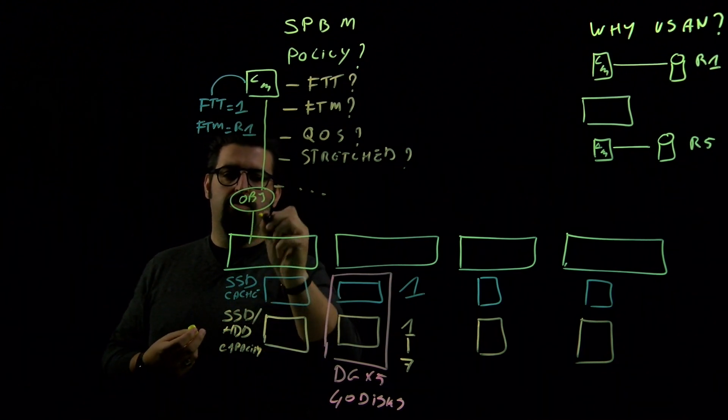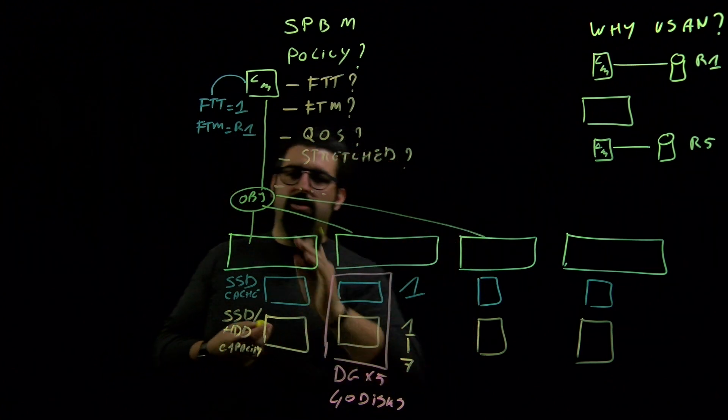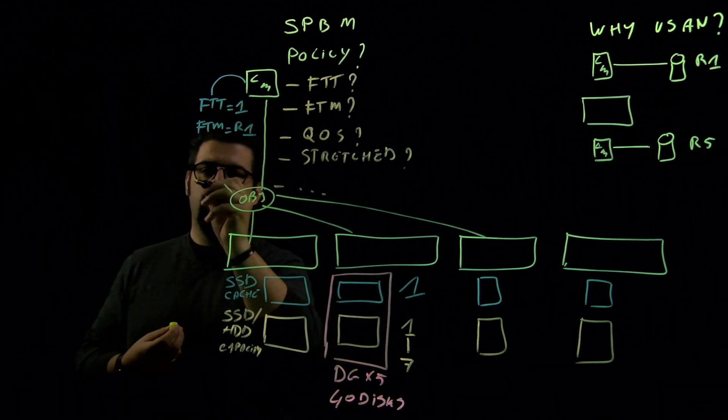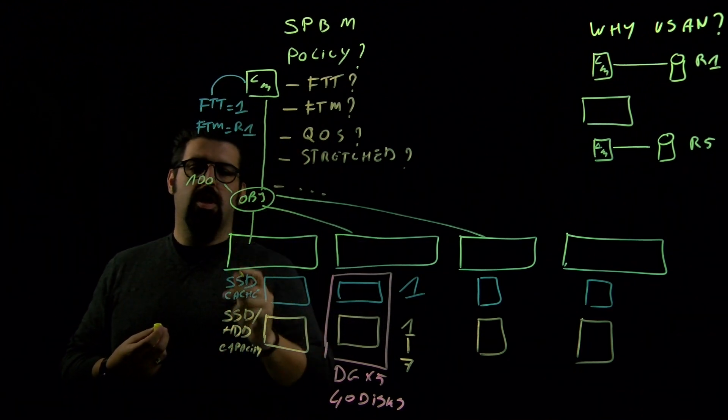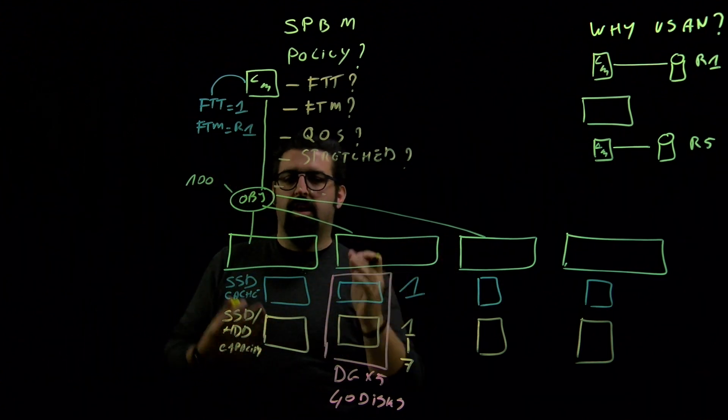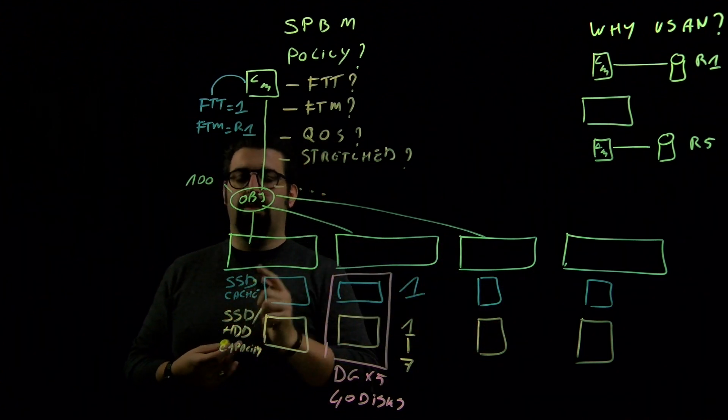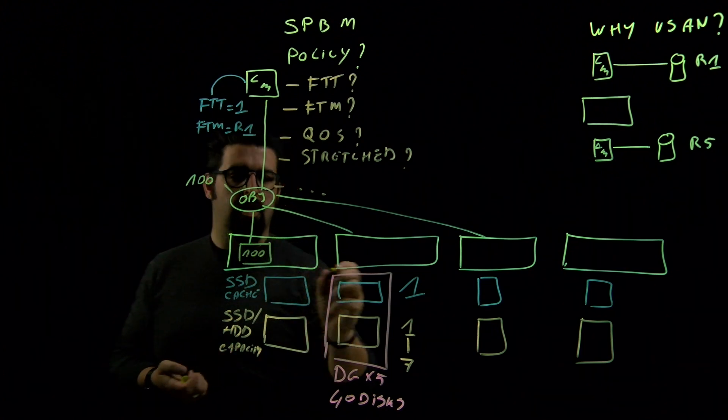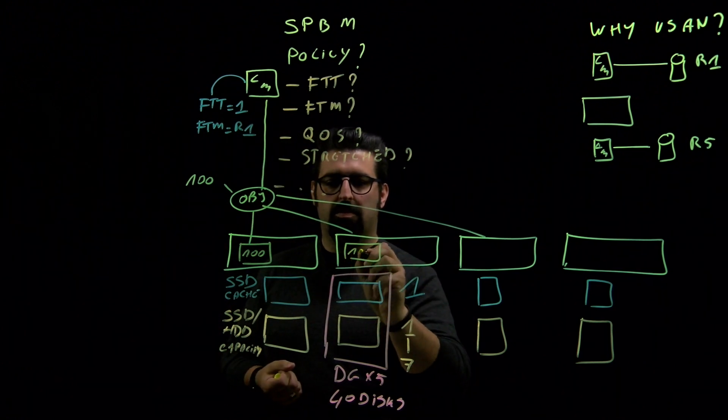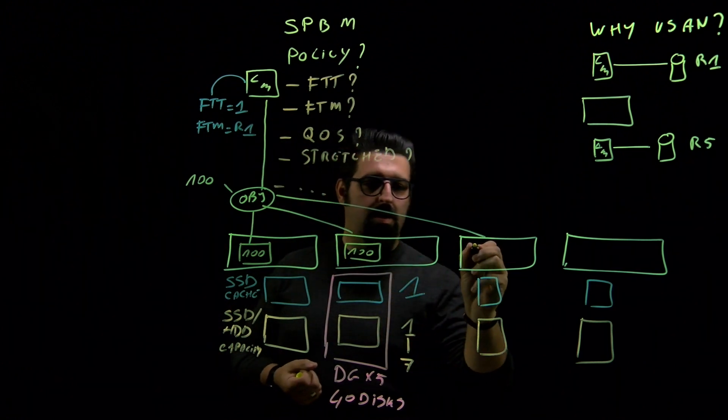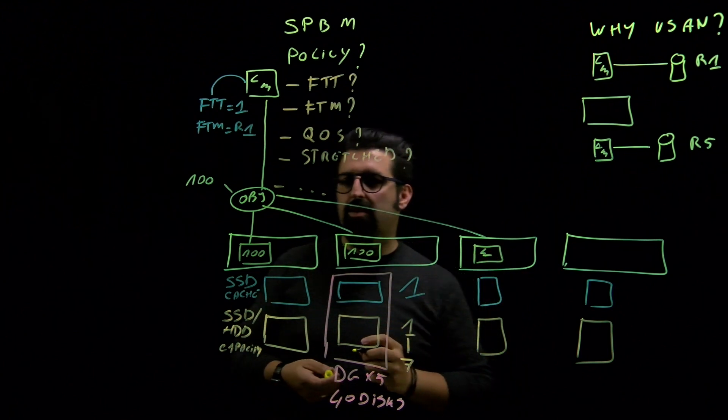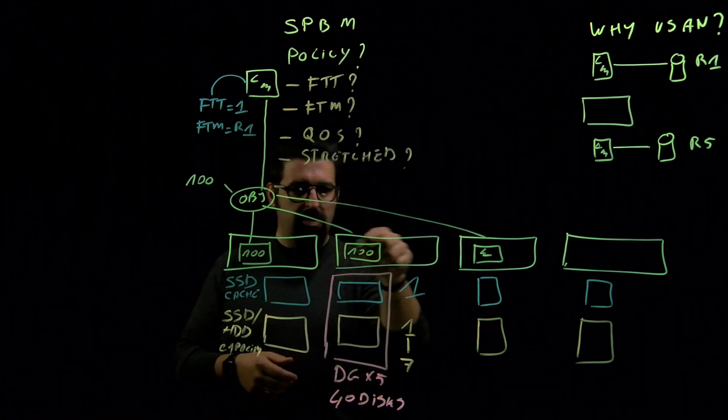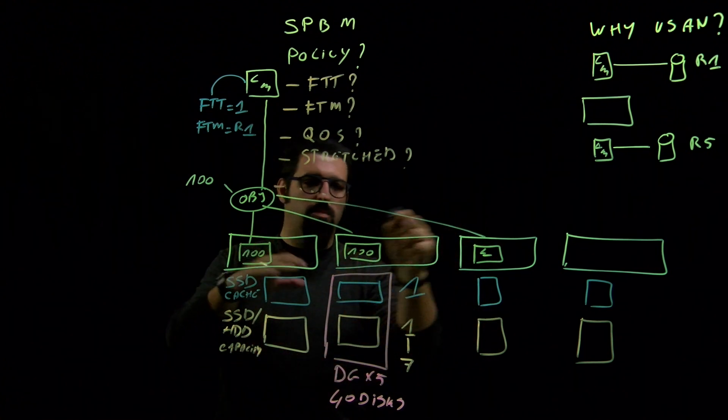That object is split into different components, and these components would like to comply with this policy. If this object is 100 gigs, it means that we should replicate data over multiple hosts, somewhere stored on these disks. That component of 100 gig has a component of 100 gig, and here we will write a witness. That witness is there as a referee in the game. If something happens to these two, there is always a majority in the cluster.